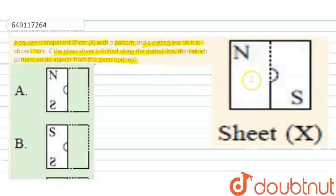Simply we have a sheet X given. We have a figure. We have to tell if we fold it in the dotted line, then what pattern will appear? Now, we will draw the pattern.